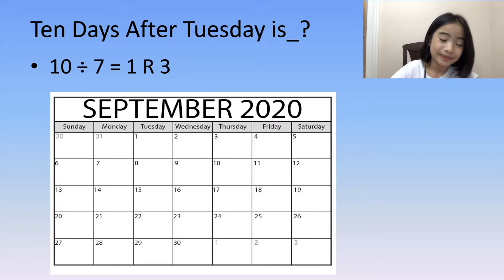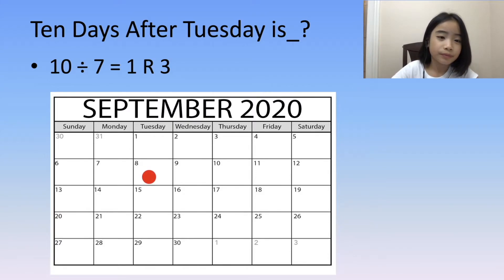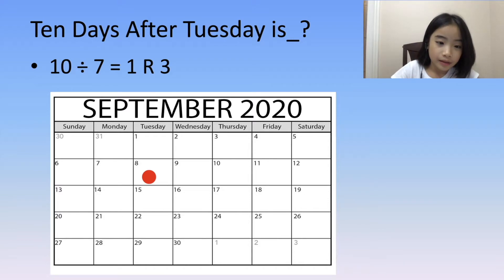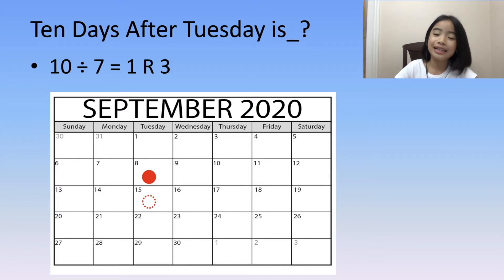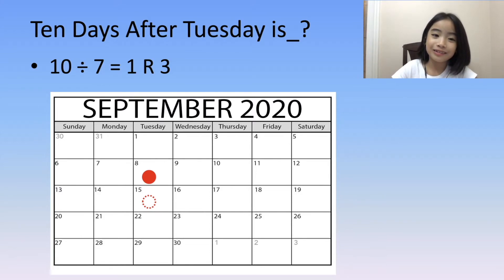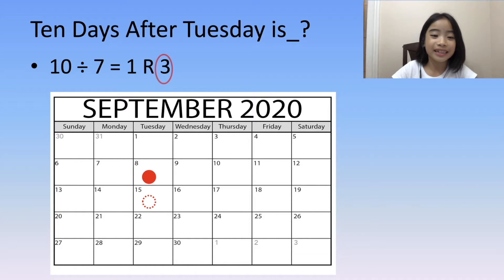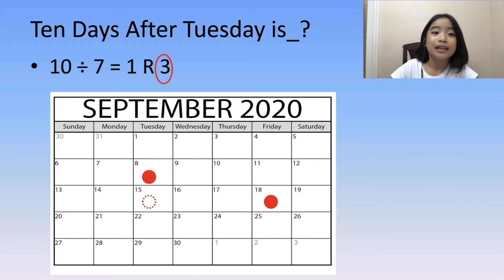Back to the calendar. We use September 8th as our Tuesday. The quotient 1 means 1 group of 7 days, and we get to September 15th — it's still Tuesday. The quotient doesn't really matter, no matter what number it is — it's still Tuesday. Only the remainder matters. There is a remainder of 3, so 3 days after Tuesday is Friday. So we have our answer — it's Friday.